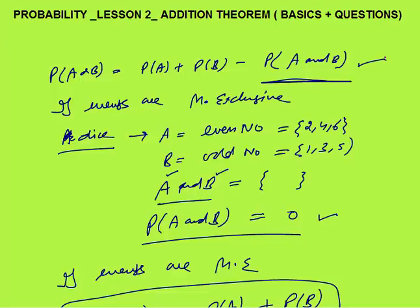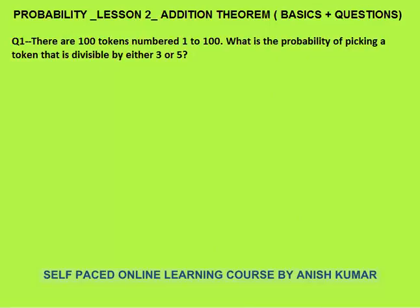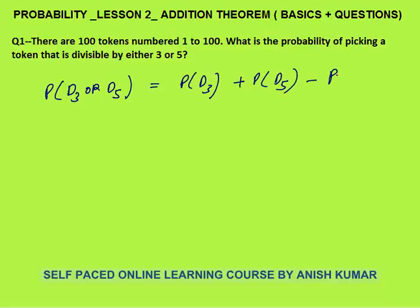First question: there are 100 tokens numbered 1 to 100. What is the probability of picking a token that is divisible by 3 or 5? This is a question on A or B. We need to calculate the probability that the token number is divisible by 3 or divisible by 5. This equals: P(divisible by 3) + P(divisible by 5) − P(divisible by both 3 and 5).